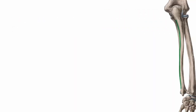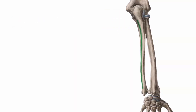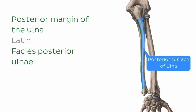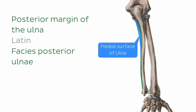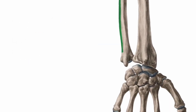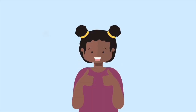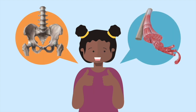Moving on to the posterior ulnar shaft, we can see that it is largely defined by this border running along its length, which is the posterior border, or margin of the ulna. This marks the division between the posterior and medial surfaces of the ulna. If we follow the posterior border down to the distal end, we find it terminates at this somewhat pointed process, which is known as the styloid process of the ulna.